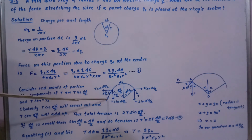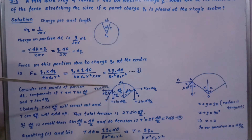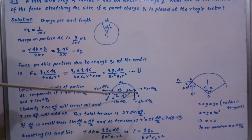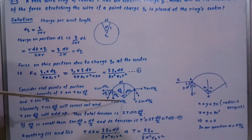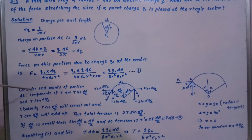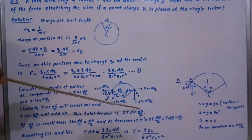Taking components of tension at the endpoints: T cos(dθ/2) acts along the wire and T sin(dθ/2) acts radially inward. The T cos(dθ/2) components cancel out, and the two T sin(dθ/2) components add up. Thus the total inward tension force is 2T sin(dθ/2). This is equation number 2.